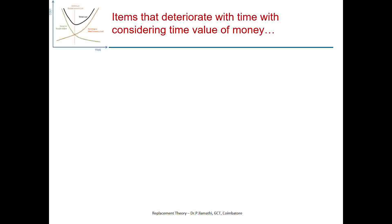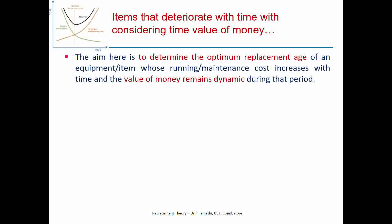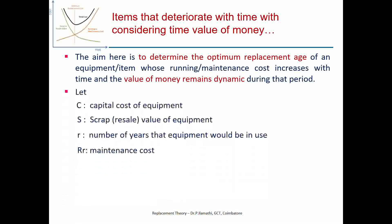Now comes replacement model 2. The aim is the same as model 1: to determine the optimum replacement age of an equipment item whose running or maintenance cost increases with time and the value of money remains dynamic during that period. The notation used: C is the capital cost of equipment, S is the scrap or resale value, R is the number of years the equipment is in use, and R_r is the maintenance cost.